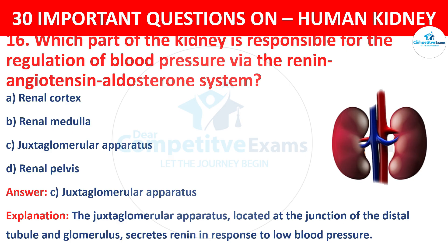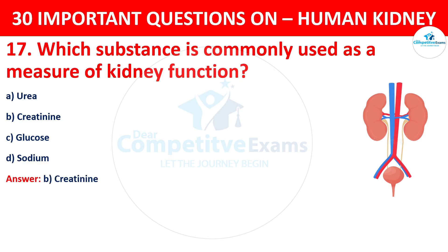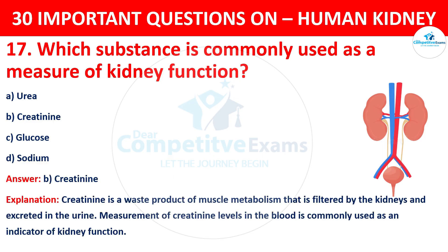Question 17. Which substance is commonly used as a measure of kidney function? The options are: Urea, Creatinine, Glucose, or Sodium. The correct answer is B, i.e. Creatinine. Creatinine is a waste product of muscle metabolism that is filtered by the kidneys and excreted in the urine. Measurement of creatinine levels in the blood is commonly used as an indicator of kidney function.